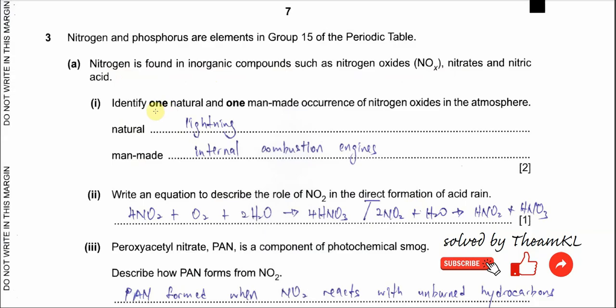Part 1: Identify one natural and one man-made occurrence of nitrogen oxide. For the natural occurrence, it is lightning, because during this process it produces a large amount of energy which can break the N≡N triple bond, so it can form the oxide.